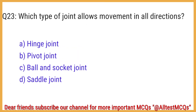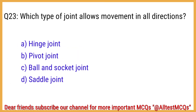Q23. Which type of joint allows movement in all directions? The right answer is option C: Ball and socket joint.